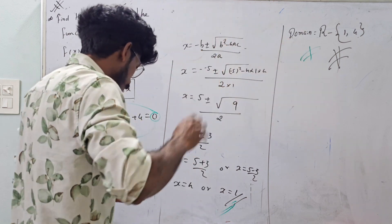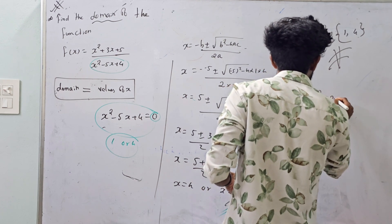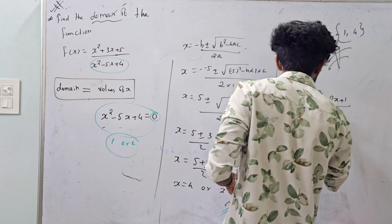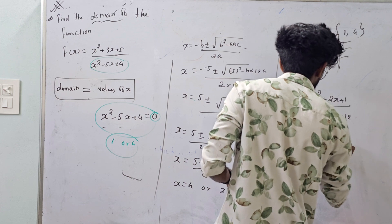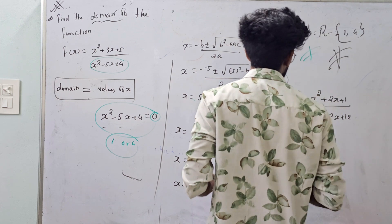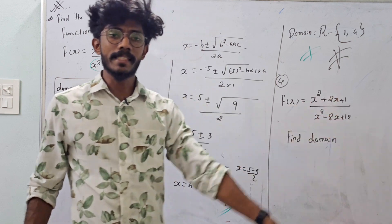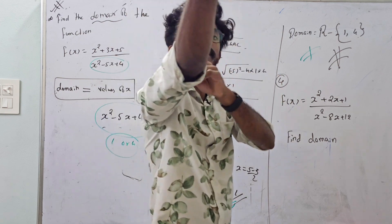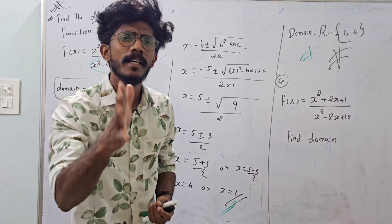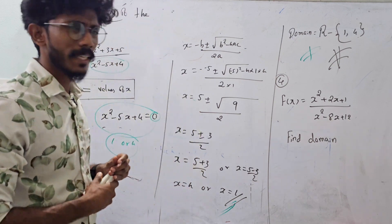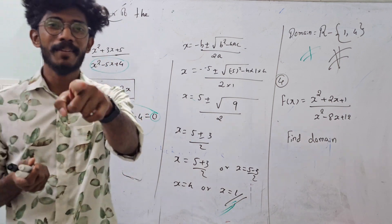I have a new question: F(x) = (x² + 2x + 1) / (x² − 8x + 2). Find the domain. Comment so that you get a mark. Share the video, share the exam, and subscribe. We will upload more videos. Bye!